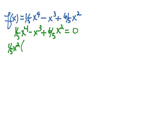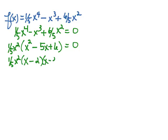So we're going to factor out one-fifth x squared, which basically means each term gets divided by one-fifth x squared, and so that's going to leave us with x squared minus five x plus six, and then we can further factor x squared minus five x plus six into x minus two times x minus three equals zero.